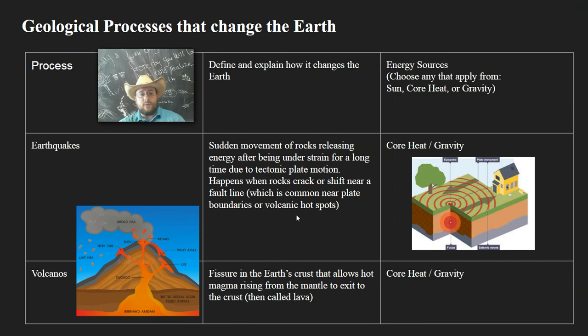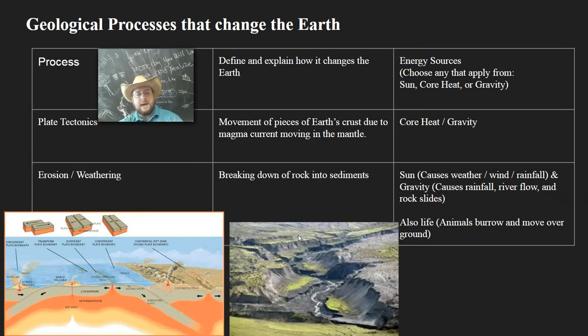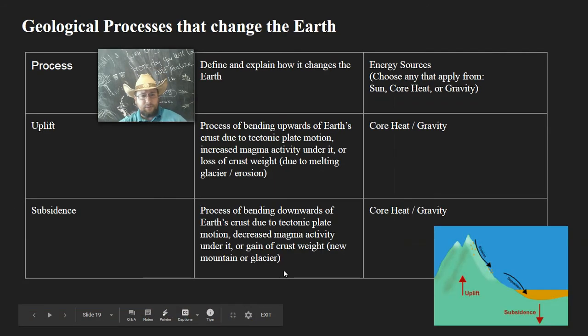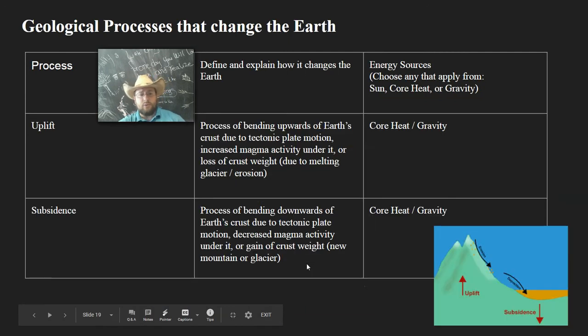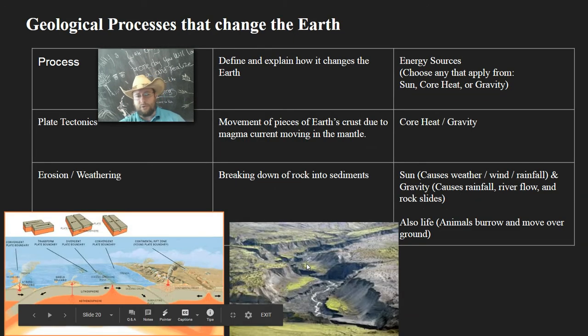The majority of the first processes—earthquakes, volcanoes, uplift, subsidence, and plate tectonics—are based on the heat of the core. Because a lot of them are essentially based on whether the magma is moving or not underneath. And because that has to do with gravity, gravity is a part of that too. Gravity also plays a role in uplift because of the weight thing and subsidence. It also plays a role in pulling plate tectonics underneath, doing subduction of plates. And making rocks shift to cause earthquakes.